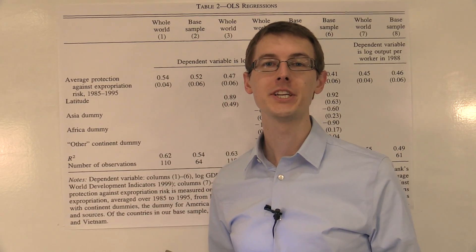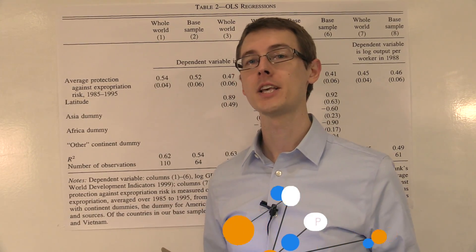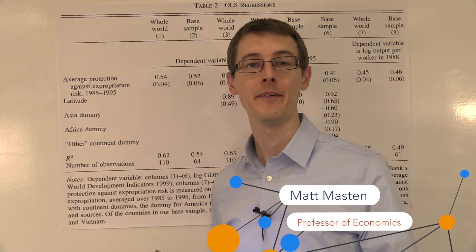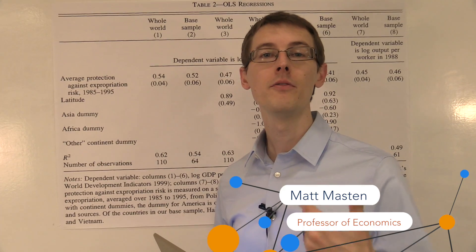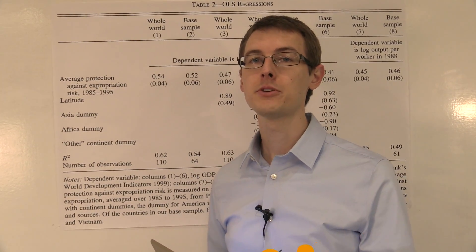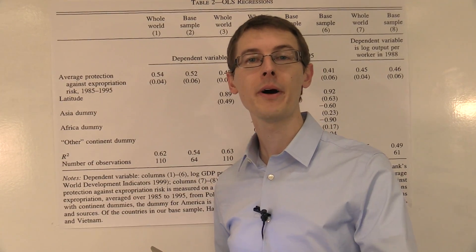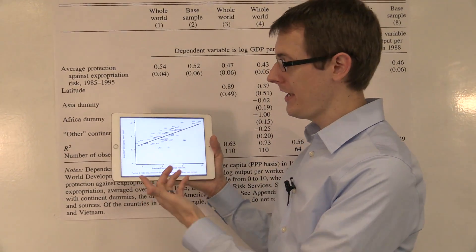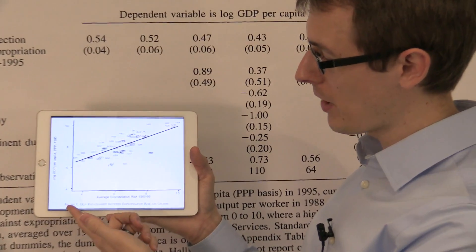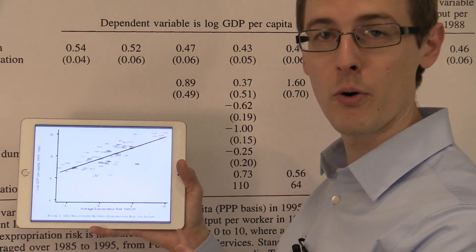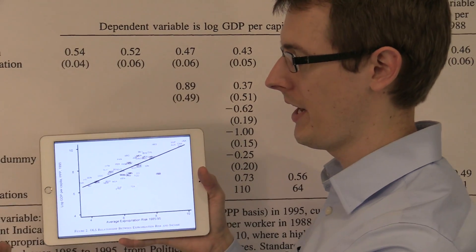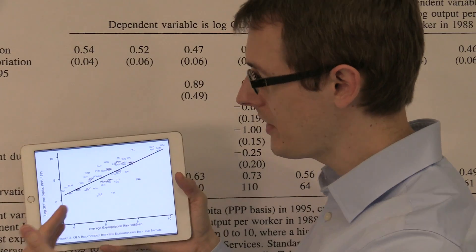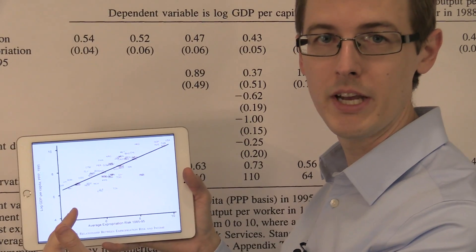Before, we talked about regressions as a way of summarizing the correlation in the data. I gave an example of the correlation between property rights and economic development, and I showed you this plot. Here we've got property rights on the horizontal axis, economic development on the vertical axis, and we can see there's generally a positive relationship.